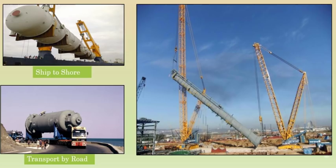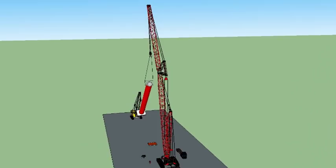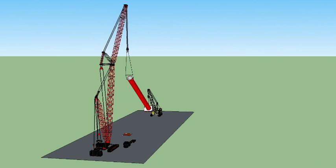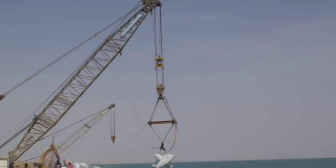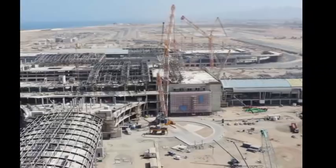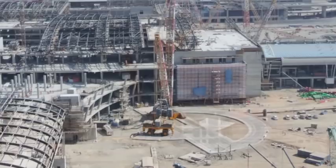Heavy Crane Lifts. Prefabricated tall standing vessels or columns are lifted from the horizontal position and rotated into the vertical position using two cranes. Shown are cranes used to build a seaport. Also shown is a crane lifting a 200-ton roof truss.